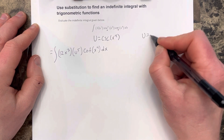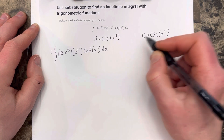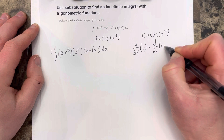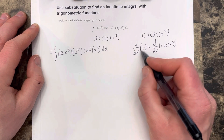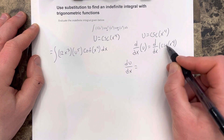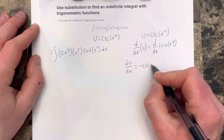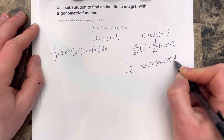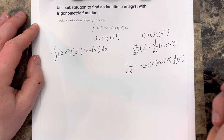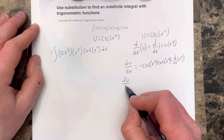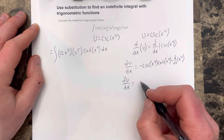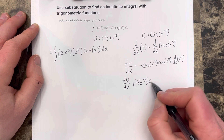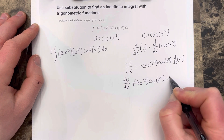Over here I'm going to find the derivative. With u equals cosecant x to the fourth, du/dx equals the derivative of cosecant, which is negative cosecant x to the fourth cotangent x to the fourth, times the derivative of x to the fourth by the chain rule. So du/dx equals negative 4x cubed cosecant x to the fourth cotangent x to the fourth.